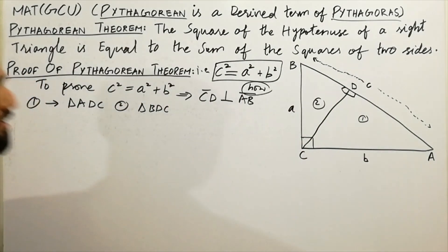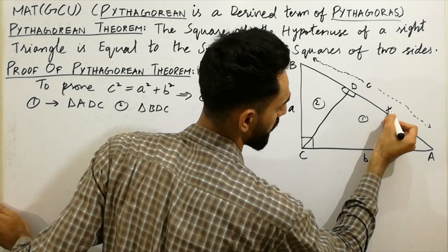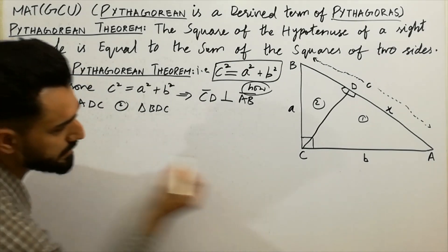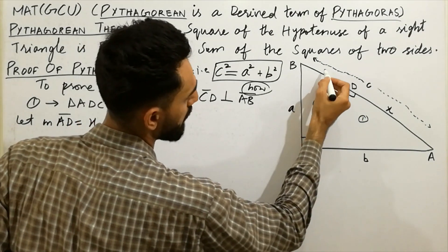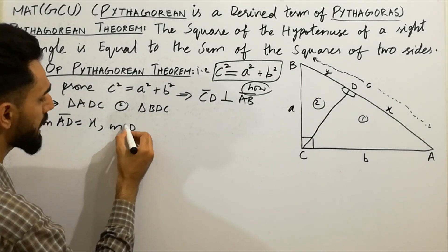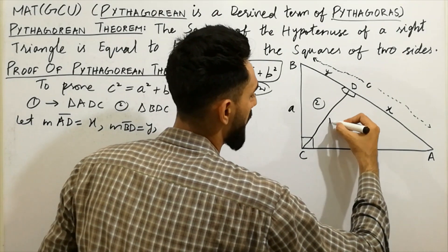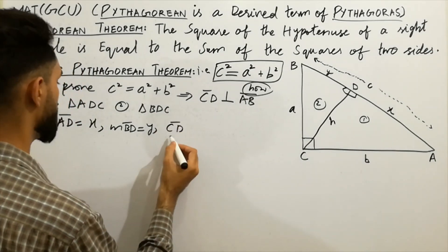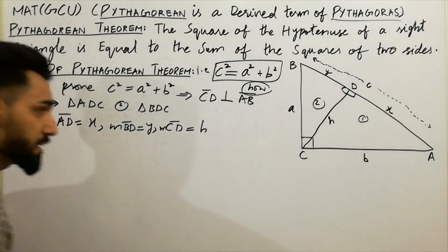Now let's assign variables. Let's suppose side AD is equal to x, side BD is equal to y, and side CD is equal to h. So we have AD = x, BD = y, and CD = h.